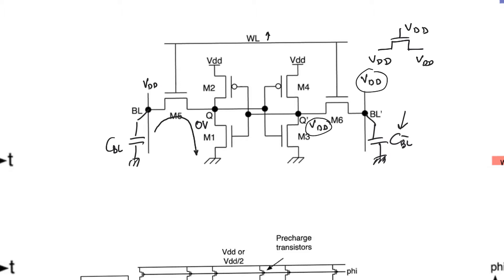CBL bar is going to keep its value of VDD. Therefore, if you want to find out if you are storing a 0 or a 1 on node Q, all you have to do is watch the voltage on CBL and see if it's dropping or not. It's actually better to look at the differential voltage between CBL and CBL bar — specifically VBL minus VBL bar — and see which direction it's going to determine if we are storing a 1 or a 0 at node Q.